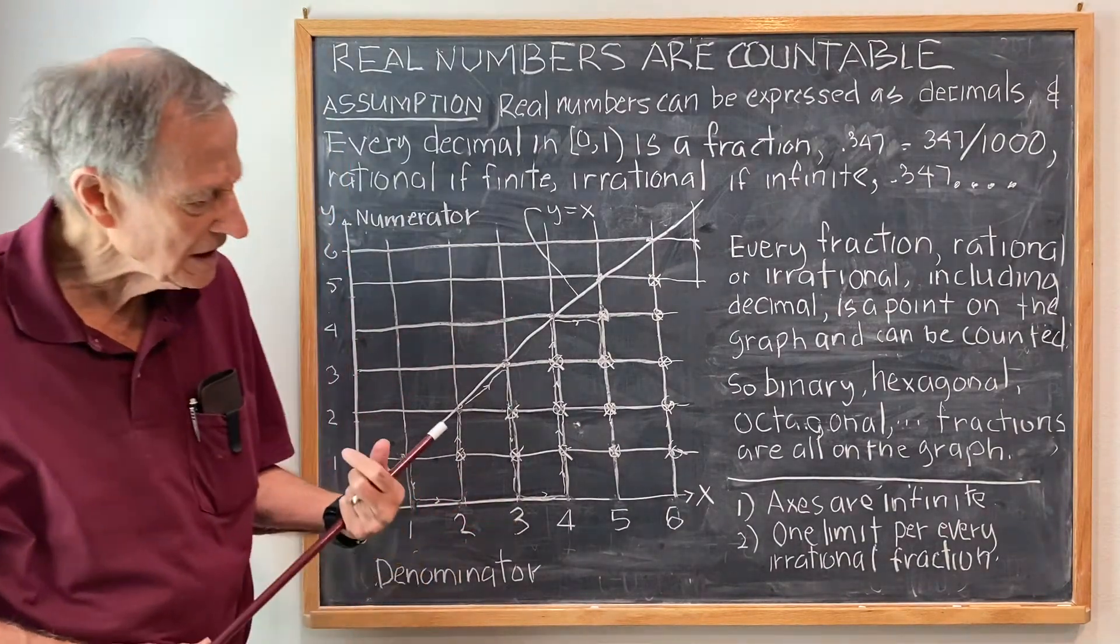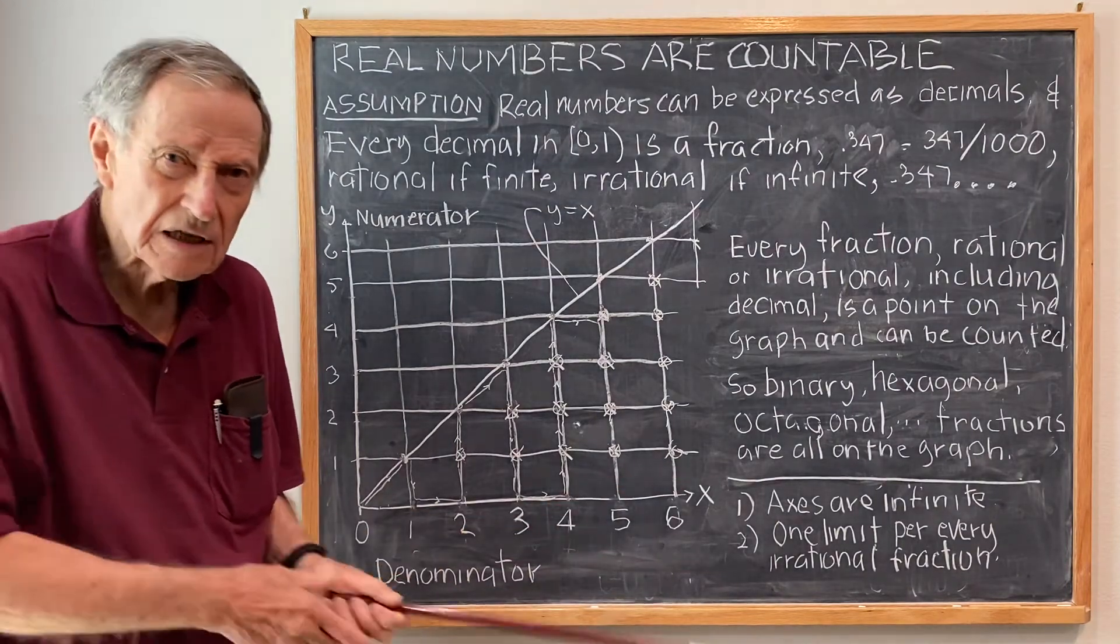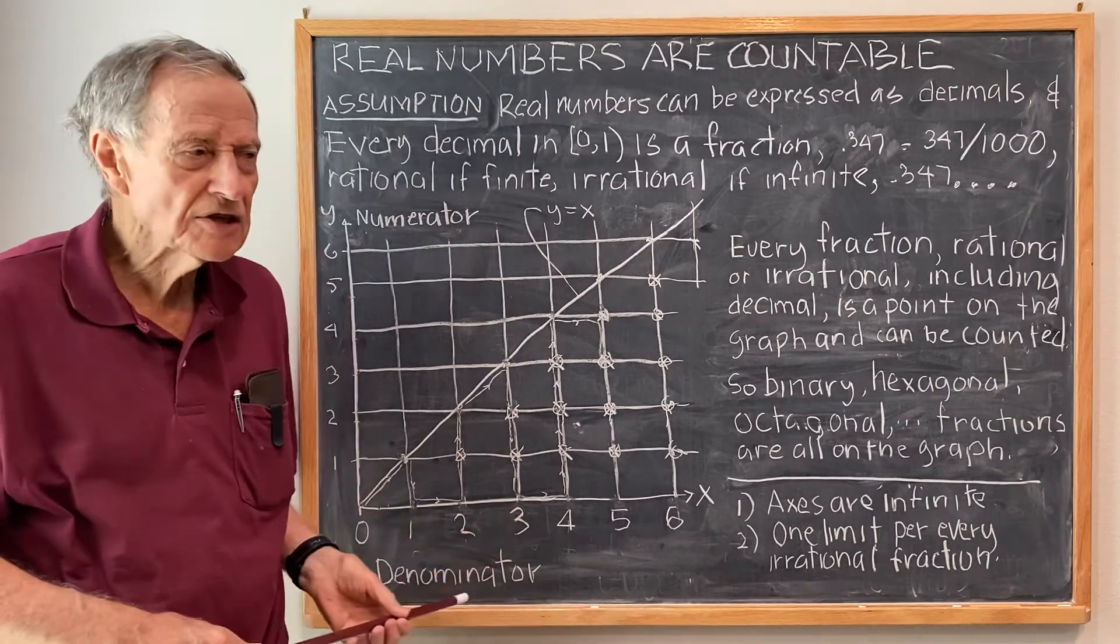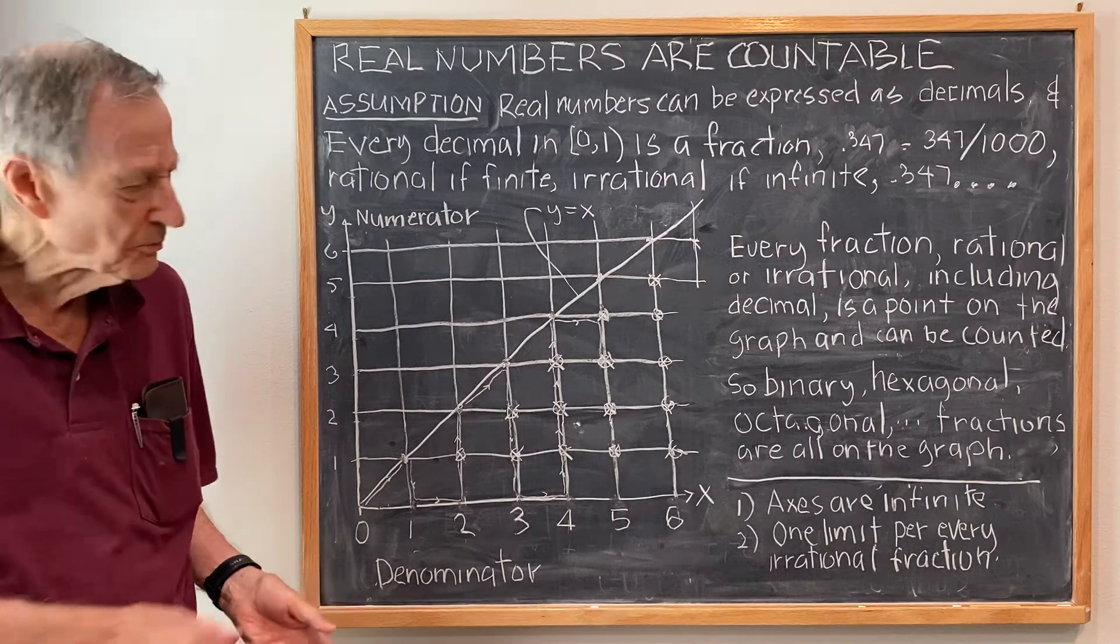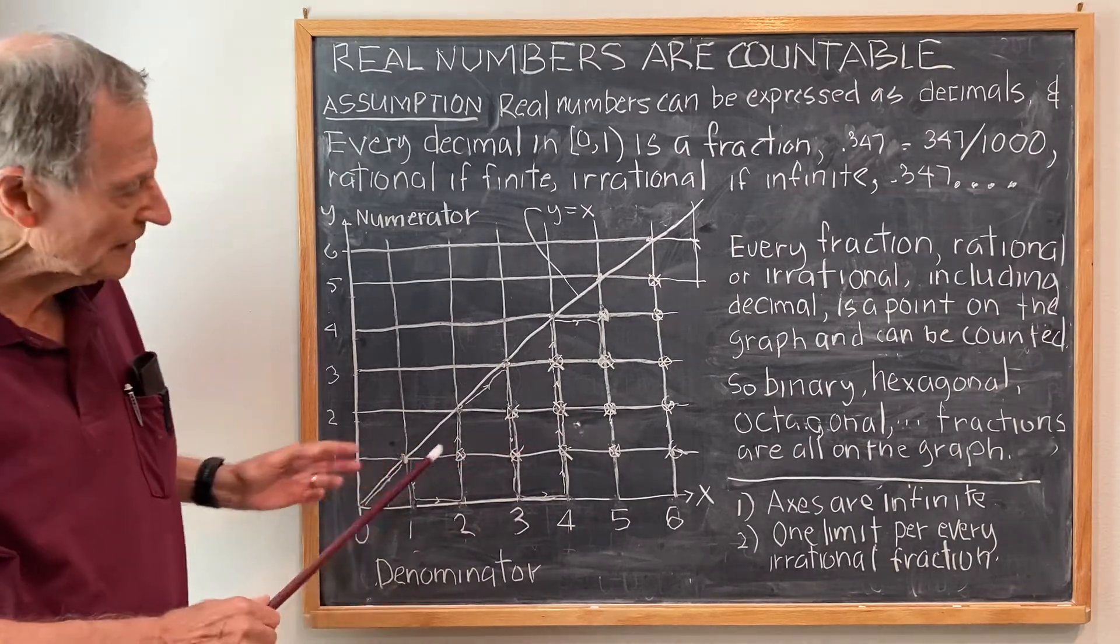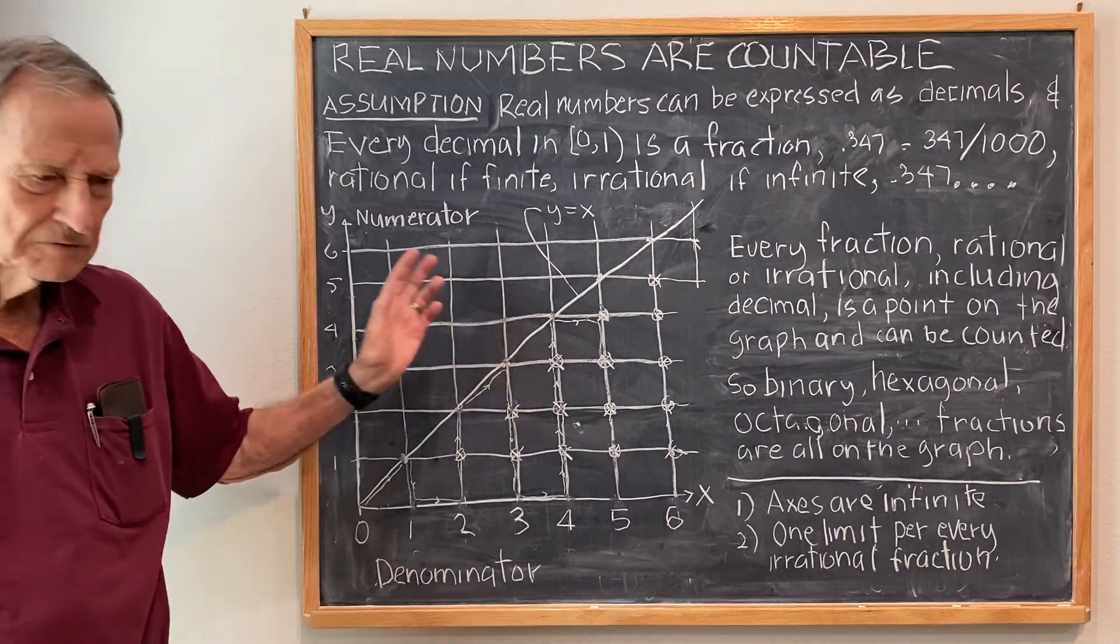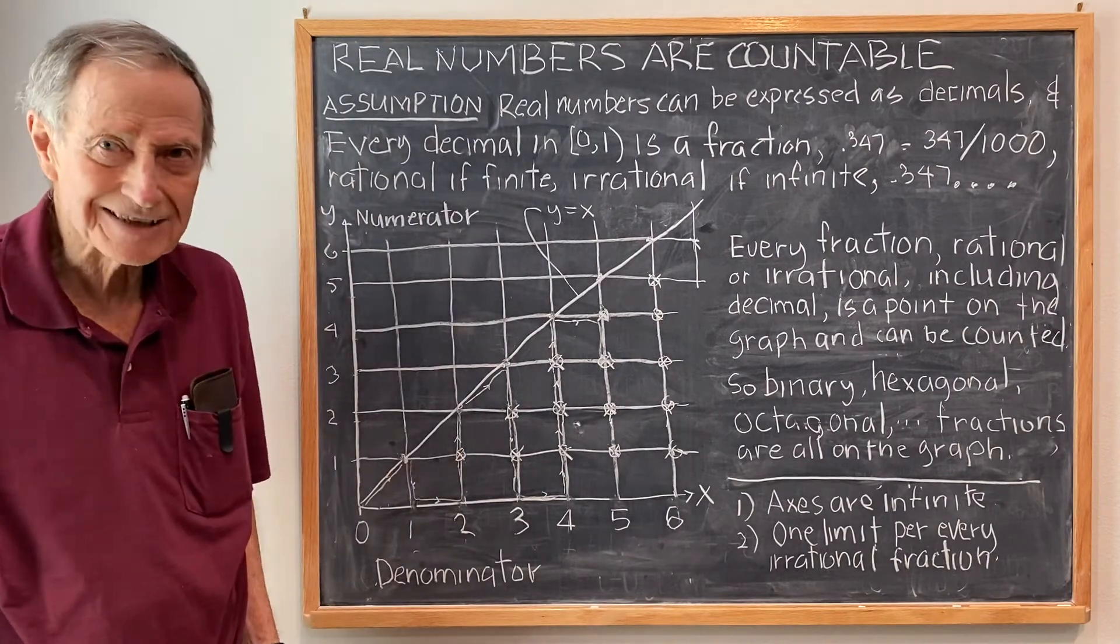However, if you claim that, if one claims that there is a limit for every irrational fraction, that doesn't change anything because then the most that it does is double the number of points on the graph and every point on the graph is countable. So, doubling at most would leave it still countable. So, in conclusion, the real numbers are countable. Thank you.